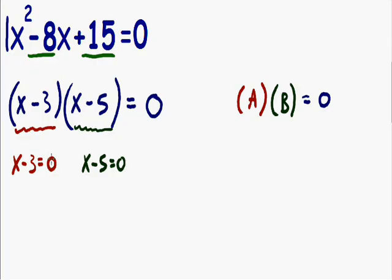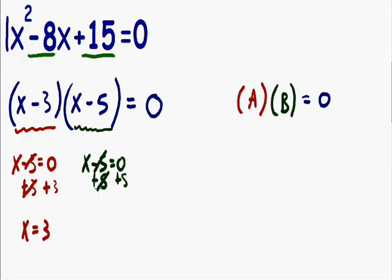Now we just need to solve for x. In the red equation, x minus 3 equals zero — add three to both sides and x equals positive three. In the green equation, x minus 5 equals zero — add five to both sides and x equals positive five. So we have two solutions for this quadratic equation: x equals three or x equals five.